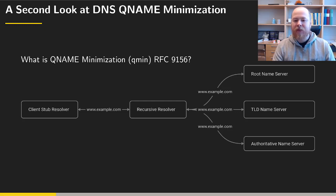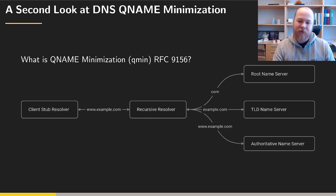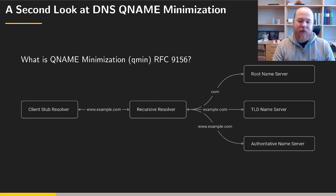So instead of sending www.example.com, the resolver will only send the label .com to the root name server, get the referral to the TLD name server for .com, then append an extra label to create example.com and send that query to the top level domain name server. It will get a referral to the authoritative name server for example.com and continue adding labels until it sends the fully qualified domain name to the authoritative name server and gets the resource record requested.